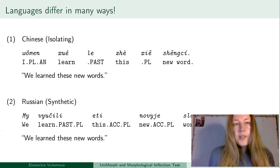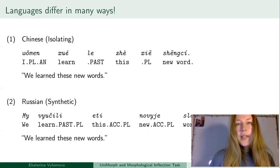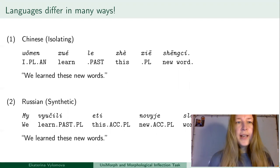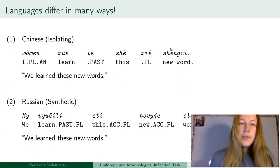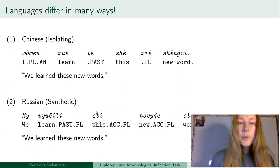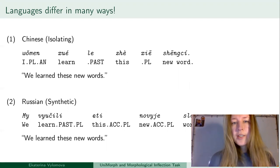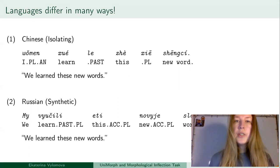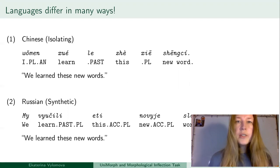For instance, if you want to say 'we learned these new words' in Chinese, which is an isolating language, you need to put words in a fixed order and the notion of past tense and plurality will be expressed as special words. Whereas in Russian, I would use morphology to express past tense and plurality features. In addition, I would put these new words in the accusative case to specify that this is a direct object of the sentence. In Russian, we use agreement to signify relations between words, so word order is more flexible.